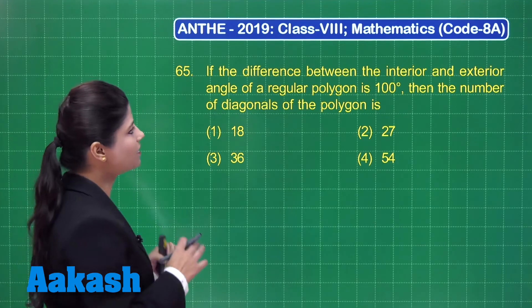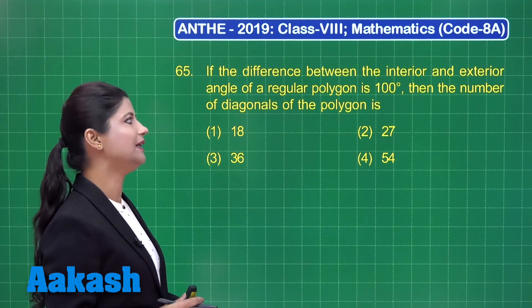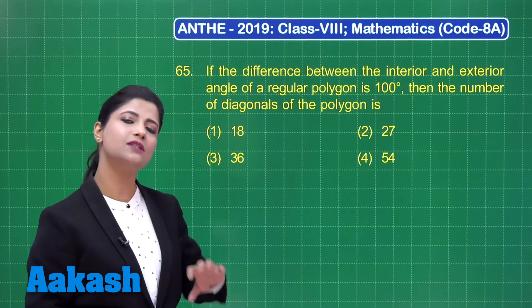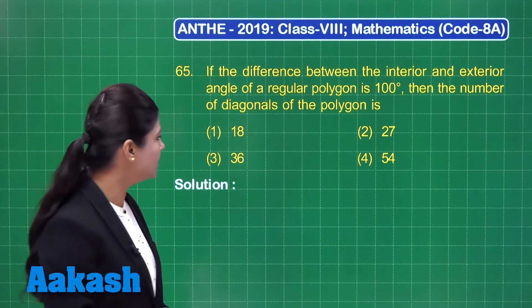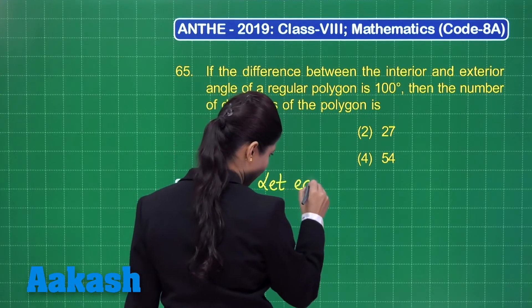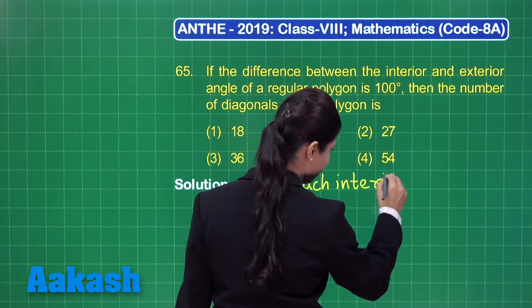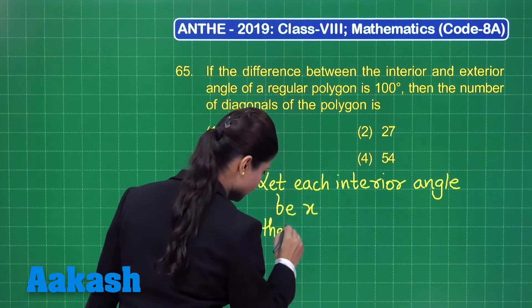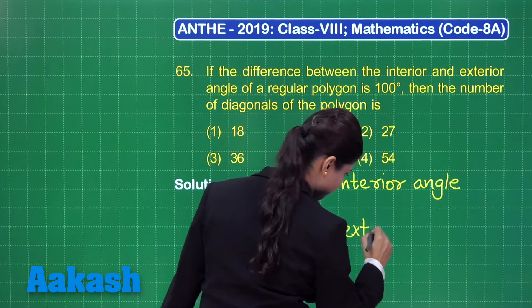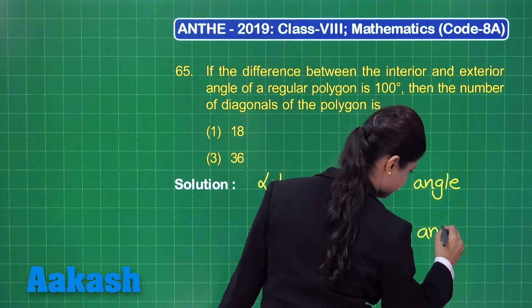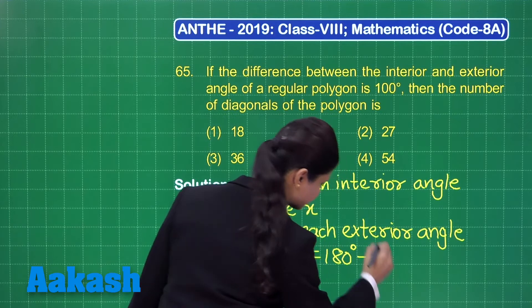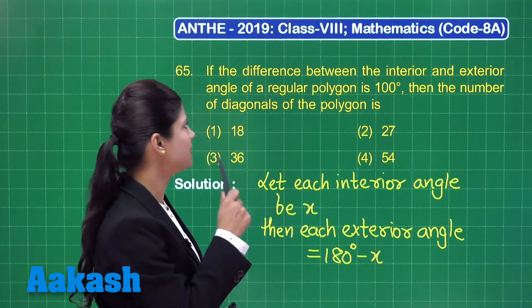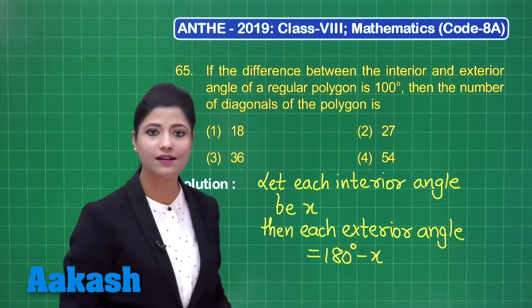For that we need the number of sides. We are not given the number of sides directly, but the difference between the interior and exterior angle of the regular polygon is given as 100 degrees. Since it is a regular polygon, all interior angles are equal and all exterior angles are equal. Let each interior angle be x; then each exterior angle will be 180 degrees minus x, as they are a linear pair.